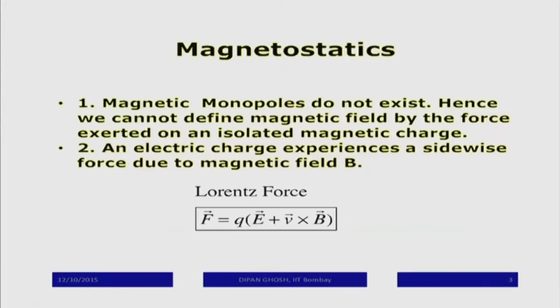The first statement to make is that free electric charges exist — I have a positive charge, you have a negative charge. One does not know of magnetic monopoles; one clearly does not even know whether they actually exist. Suppose you take a magnet — it always consists of a north pole and a south pole. You break a magnet into two, and each one will have a north pole and a south pole.